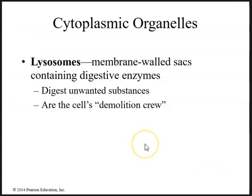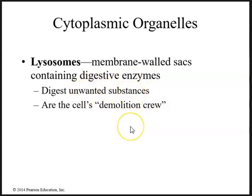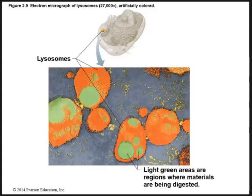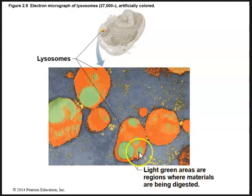The next organelle is lysosomes — membrane-walled sacs containing digestive enzymes. These digest any unwanted substances and are known as the demolition crew. Here we can see an electron micrograph of lysosomes containing those enzymes, and the light green areas are regions where materials are being digested.